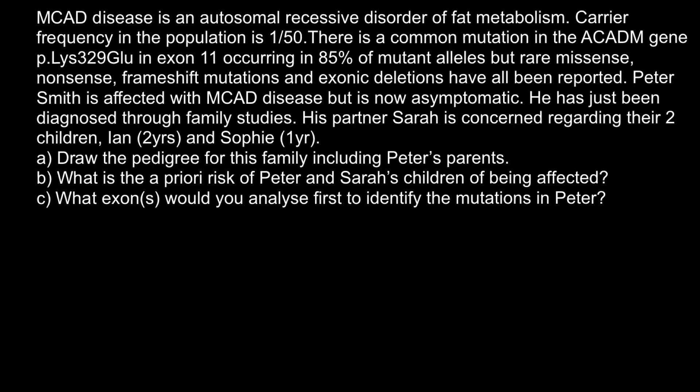Question C: What exons would you analyze first to identify the mutations in Peter? It is very clear that since 85% of mutations occur in exon 11, we are going to start by sequencing exon 11. As you can see, 85% of all mutations would be the substitution of lysine at position 329 with glutamine.